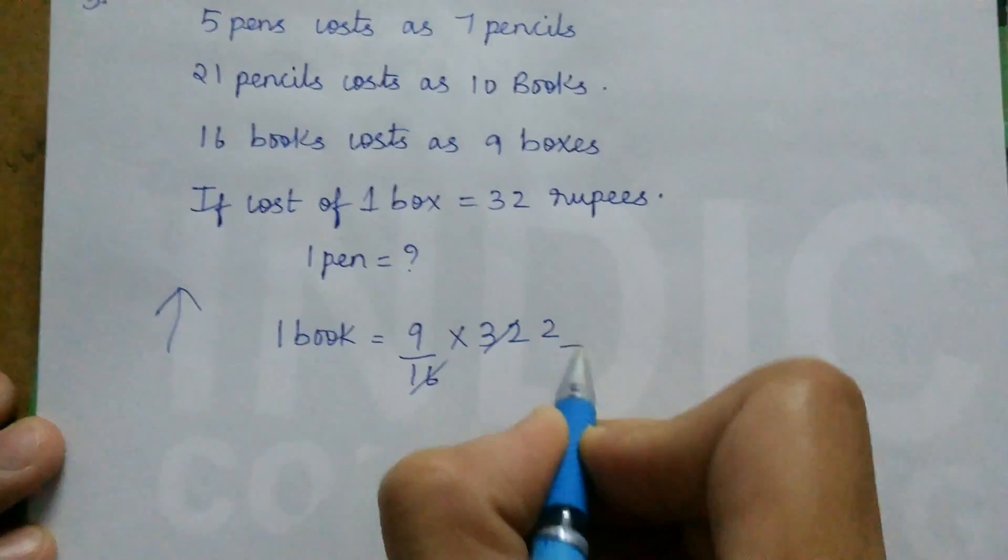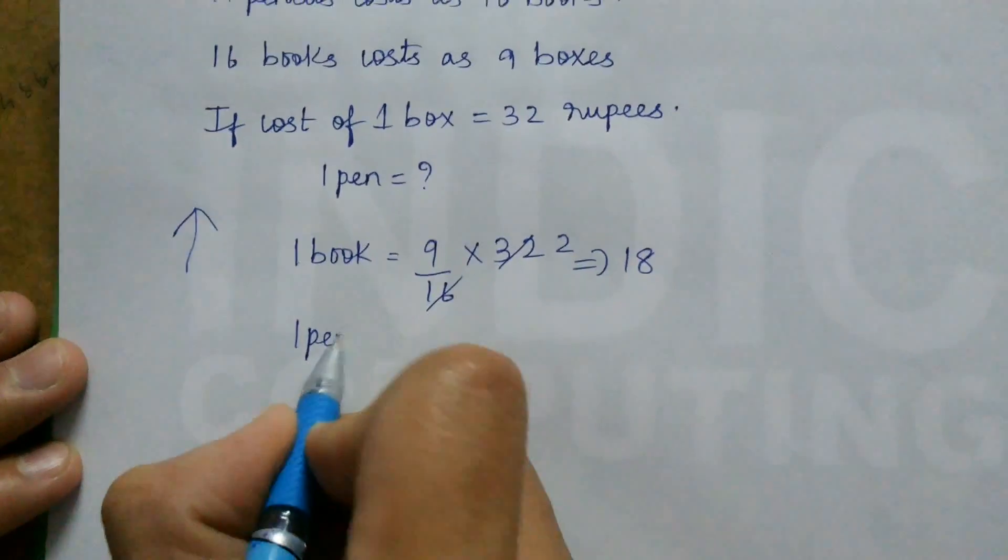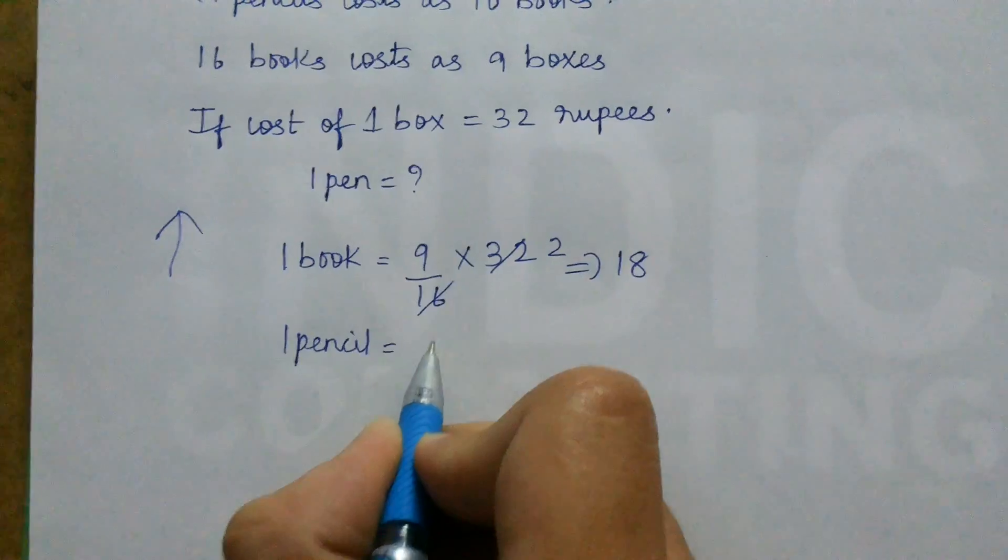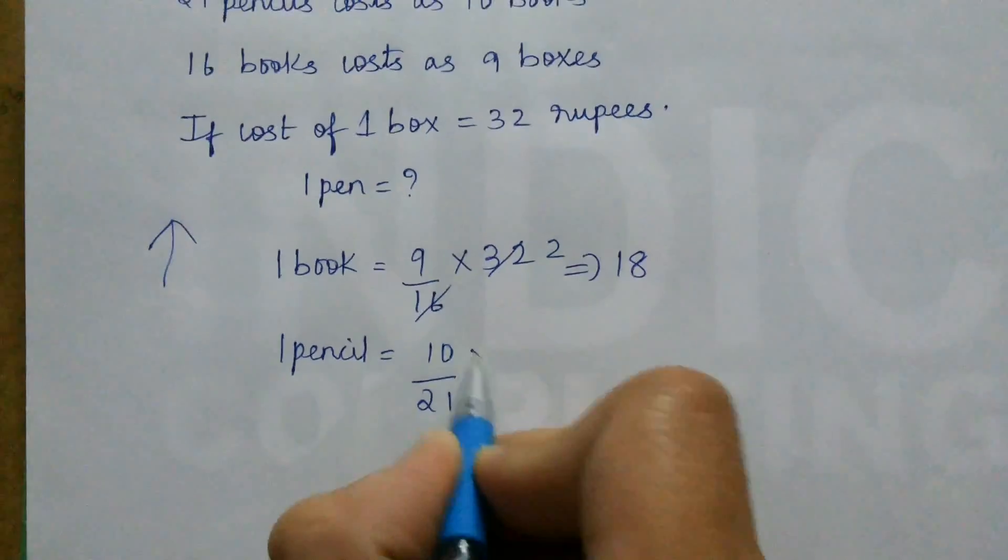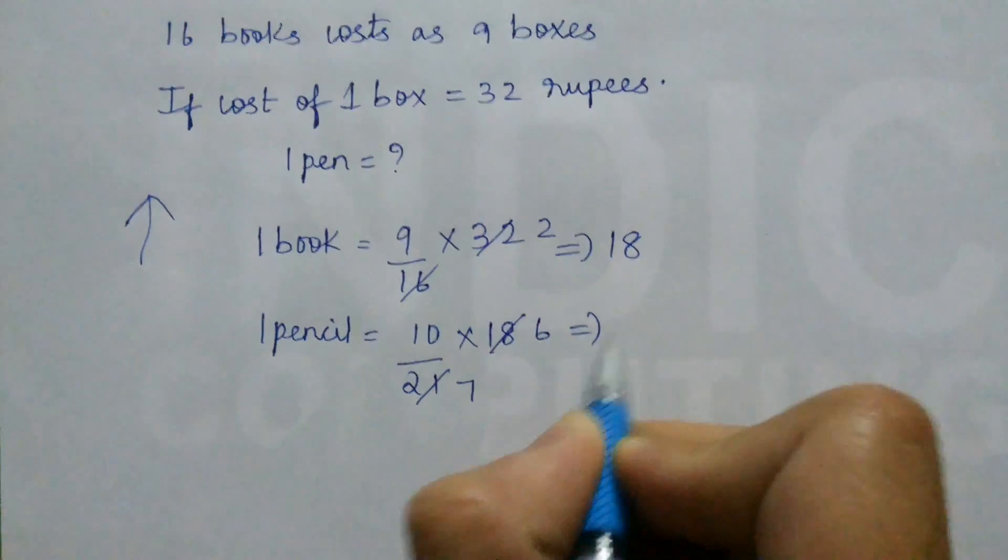16 two times, that is 1 book is equal to 18 rupees. Now 1 pencil is equal to 10 by 21 times of number of books, that is 18. 3 7s are, 3 6s are 18. We get 60 by 7.